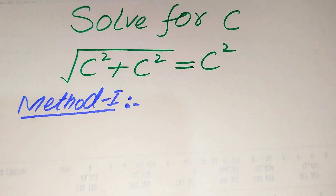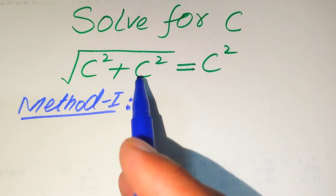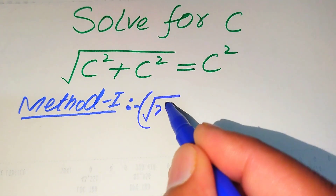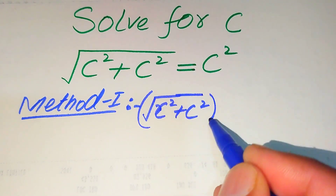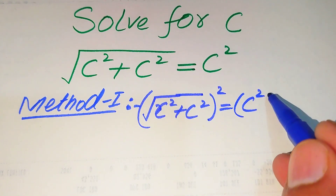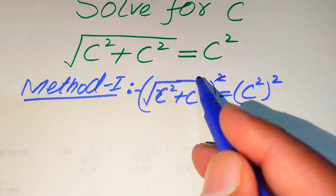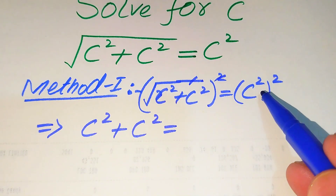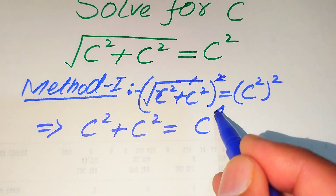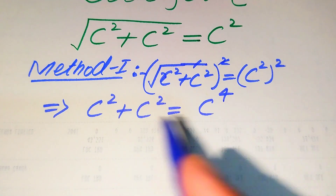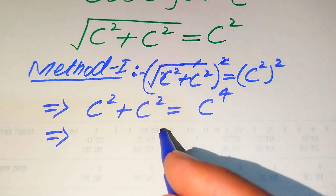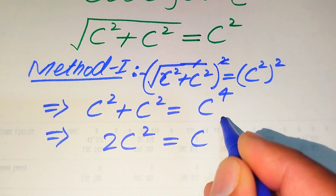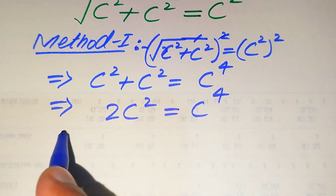In the first method we need to remove the square root sign from the left hand side. To remove it, we square both sides. When we square, the square root is gone and we get c squared plus c squared equals c squared squared, which is c to the power of four. On the left hand side, these two like terms add together to become two times c squared equals c to the power of four.